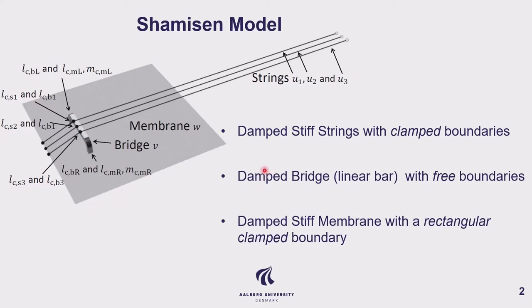The strings are modeled as damped stiff strings with clamped boundaries, which are resting on the bridge and making a connection. The bridge is modeled as a damped linear bar with three boundaries, which has a lot of connections — two connections to the membrane and three connected to each of the strings. The membrane is modeled as a damped stiff membrane with a rectangular clamped boundary, connected to the bridge at two locations.